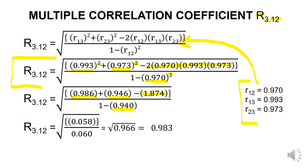Subtracting the expressions in the numerator and denominator, the numerator is equivalent to 0.058 and the denominator is equivalent to 0.060. Dividing 0.058 by 0.060 gives 0.966 under the square root. The square root of 0.966 is 0.983, which means the multiple correlation coefficient R3.12 is equivalent to 0.983.